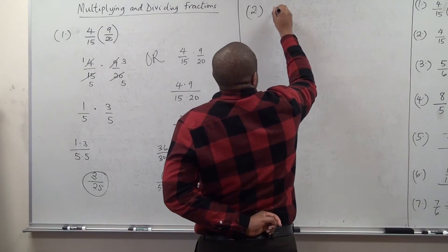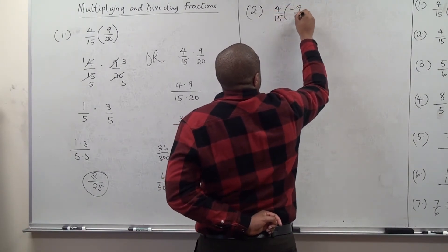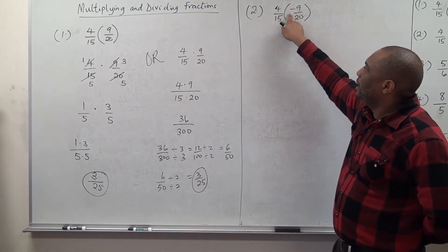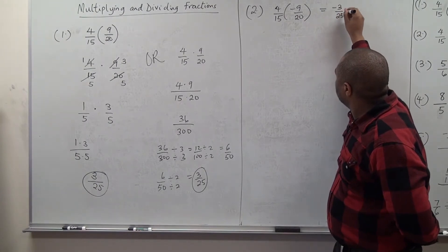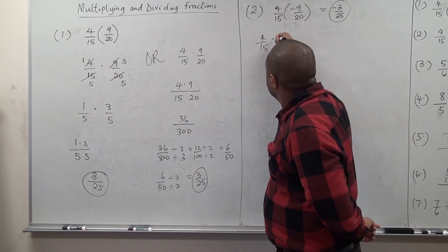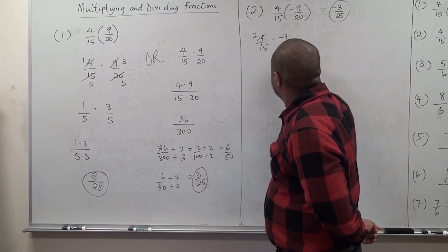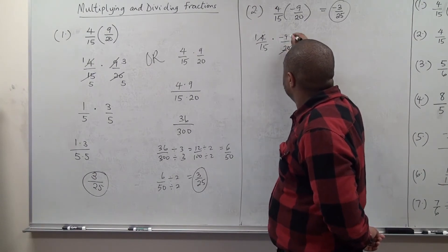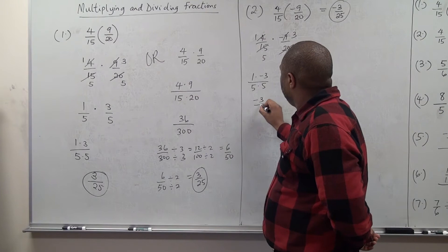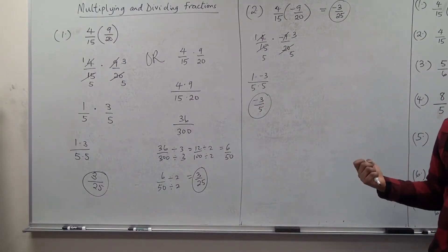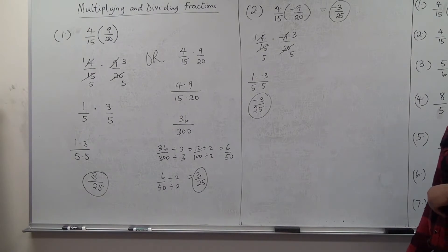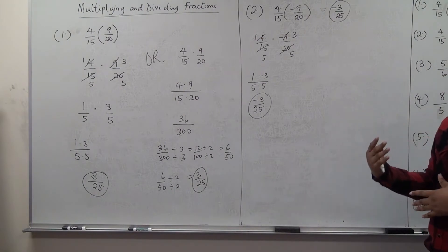Number 2: 4 over 15 times negative 9 over 20. This is still the same calculation, but we have a negative sign here. Positive times negative gives you negative, so this will give us negative 3 over 25. Simplifying before multiplying: 4 into 4 is 1, 4 into 20 is 5, 3 into 9 is 3, 3 into 15 is 5. So 1 times negative 3 over 5 times 5 gives negative 3 over 25. I always like to simplify before I multiply.